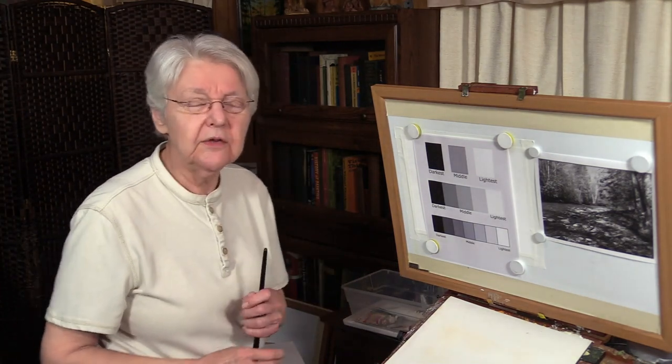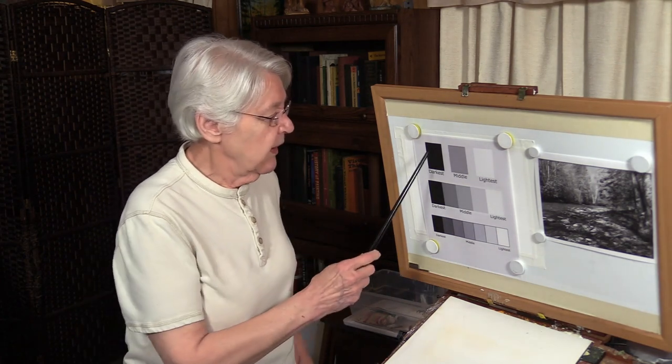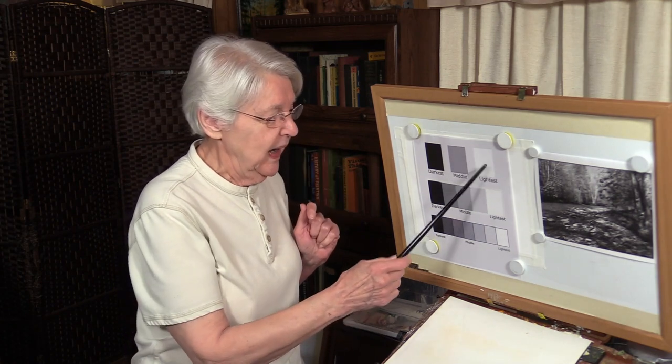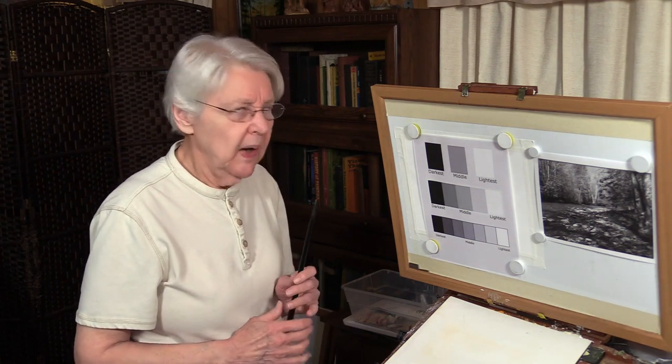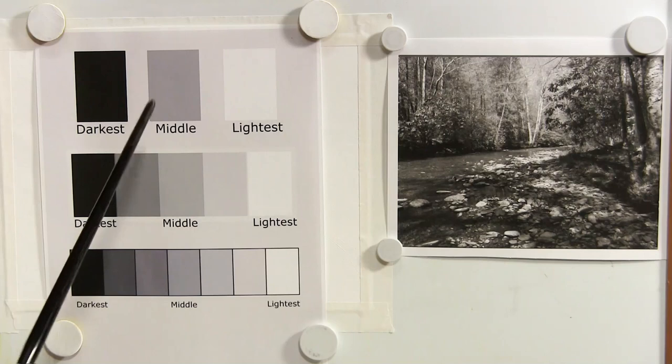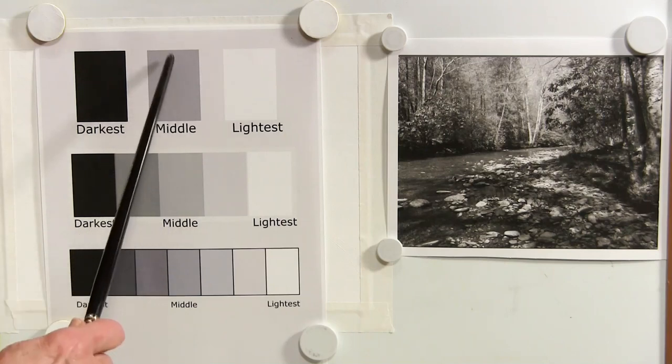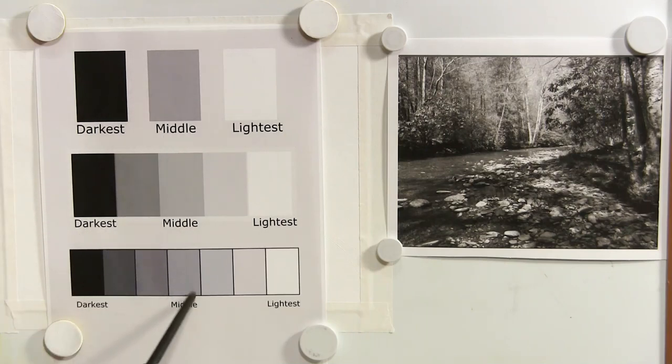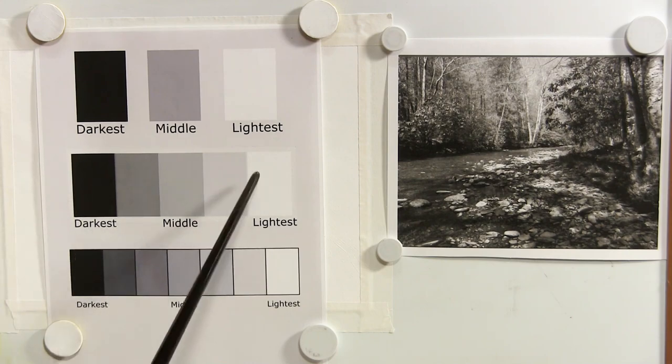Every value scale has one thing in common: the darkest dark is always on one end, and the lightest light is always on the other end. From that point it gets subdivided. In most value scales, the middle value will be right in between the darkest dark and the lightest light. I won't say that's consistent among all of them, but it is consistent among most of them.